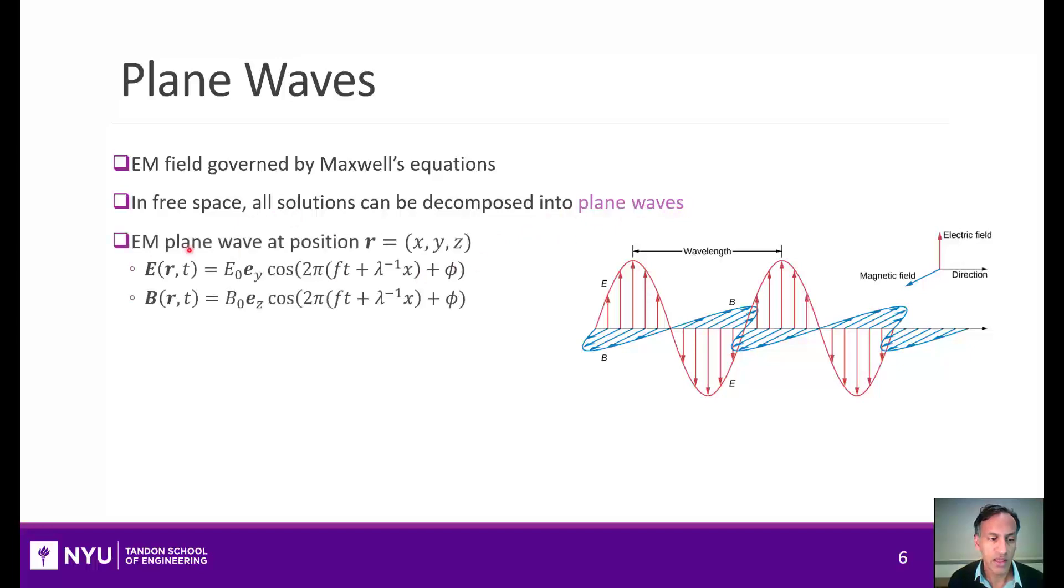Plane waves mathematically have this expression here, which means that the electric field as a function of the position and time have this sinusoidal function. This is an electromagnetic field that travels in the x direction, but you can rotate it into other directions as well. And the B field has this sinusoidal pattern here.